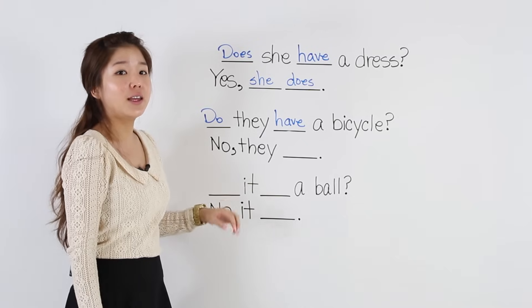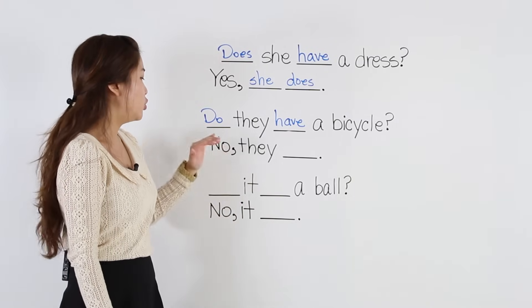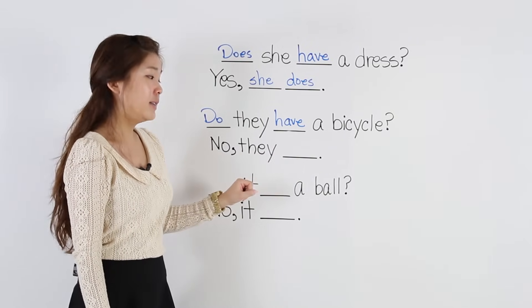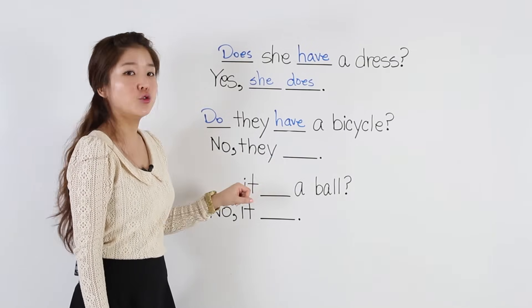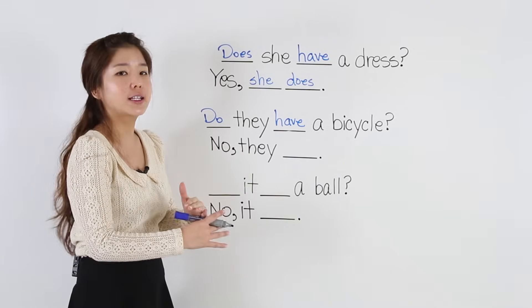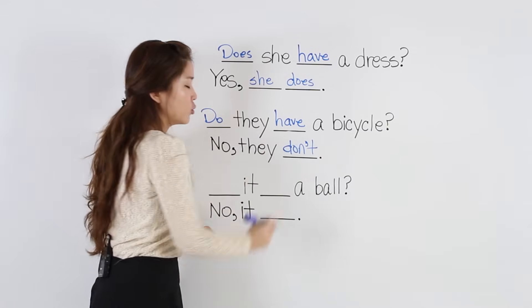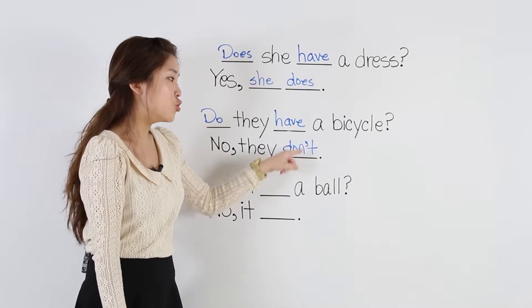This time, the answer is negative. No, they... What do we put here? It doesn't make sense to say do, right? No, they do. That's wrong. It's a negative. We have to say, no, they don't. No, they do not.